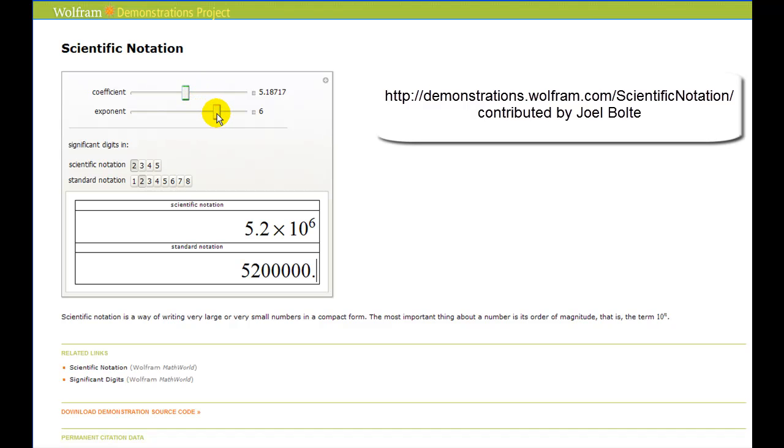If the exponent is negative, again, look at this number. If I want to convert this to scientific notation, I know it's a small number, so right away I'm thinking the exponent on ten is going to be negative. But the question is, how many places do I move the decimal to make it 5.2?